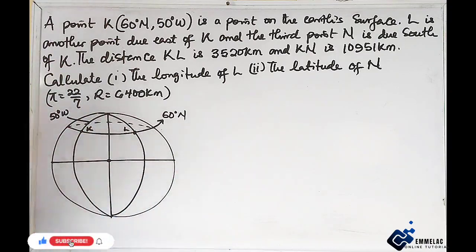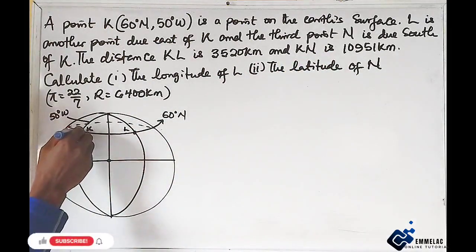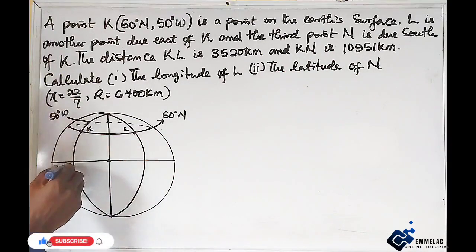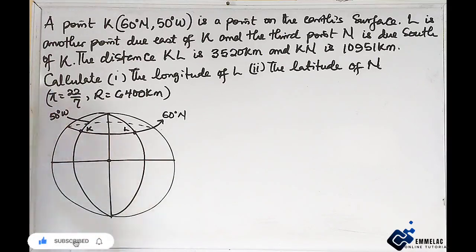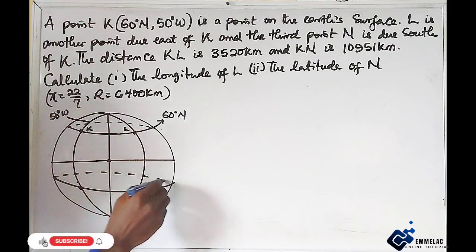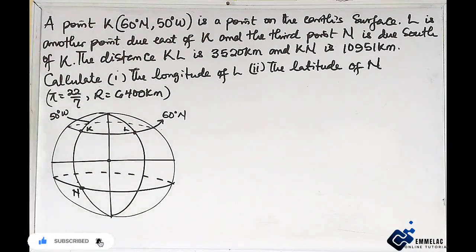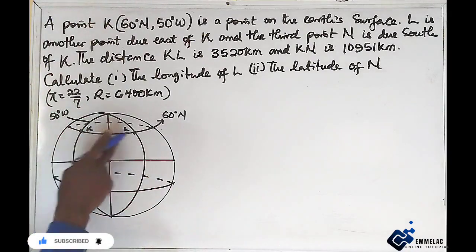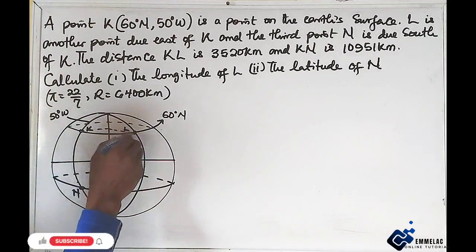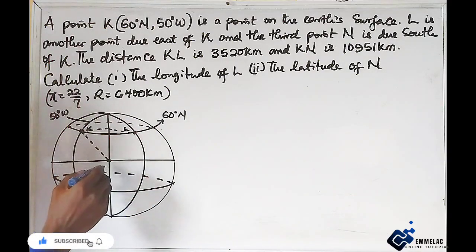And N is due south. At this point also K. N is due south of K, so let us assume this here. This is N. For K and L, we have it like this. And for K and N, since it is longitude from the equator.